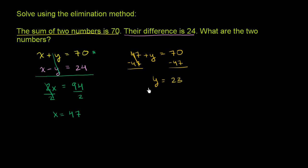And you can verify that it works. If you add the two numbers, 47 plus 23, you definitely get 70. And then if you take 47 minus 23, you definitely get 24. So it definitely meets both constraints.